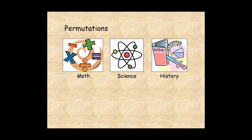You can use the fundamental counting principle to find the number of different ways this can be done. There are three choices for the first class, two choices remaining for the second class, and one choice remaining for the third class. So there are a total of six arrangements or permutations for the three classes.